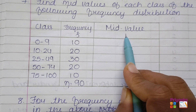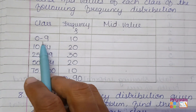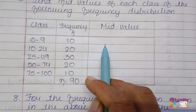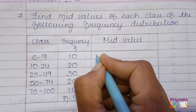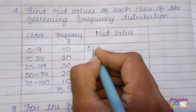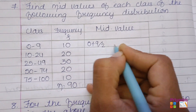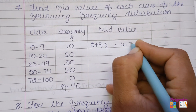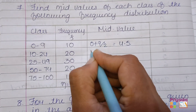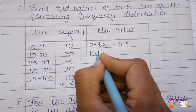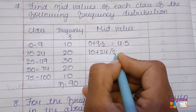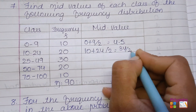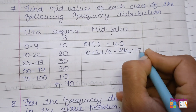The formula to find out mid value is: upper limit plus lower limit divided by 2, you will get the value of mid value. That is 0 plus 9 divided by 2, you will get 4.5. Same with the next: 10 plus 24 divided by 2 will be 34 divided by 2, you will get 17.